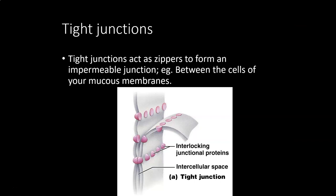Next, we're going to talk about three different ways that cells can essentially be glued together. Tight junctions are like zippers: you zip two cells together very tightly so that material cannot get in between those cells. Any place where we want a really good barrier, we hold cells together with tight junctions. These are fairly expensive connections to make.